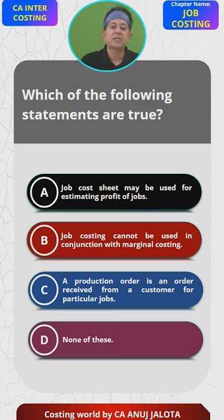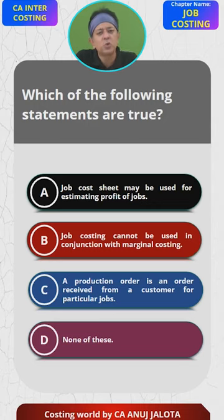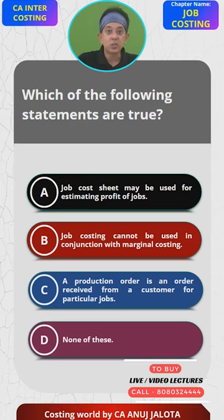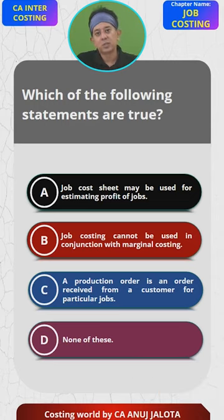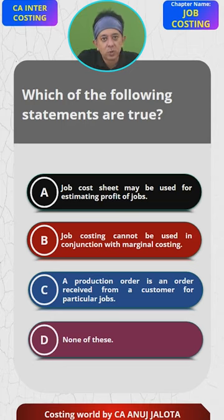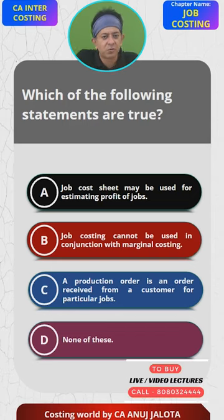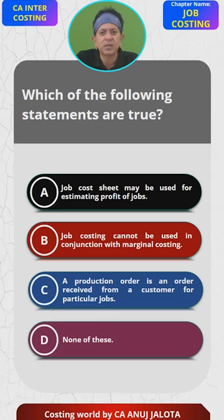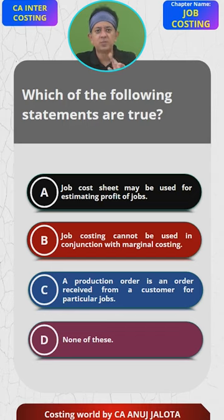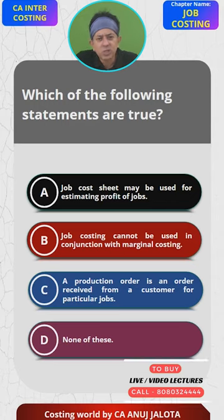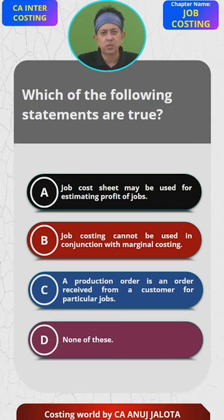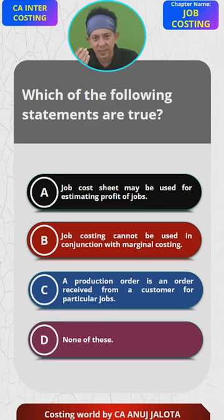Option A: A job cost sheet may be used to estimate the profit of a job. We have done this in many questions in class — you make a job sheet, you know the cost of the job, and you also know the selling price because you've taken the order and fixed the selling price with the supplier. The difference between selling price and cost is your profit, so A is correct.